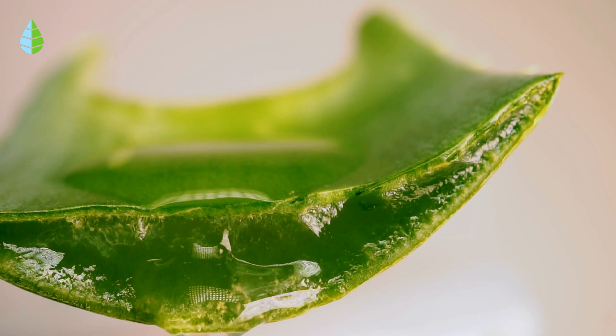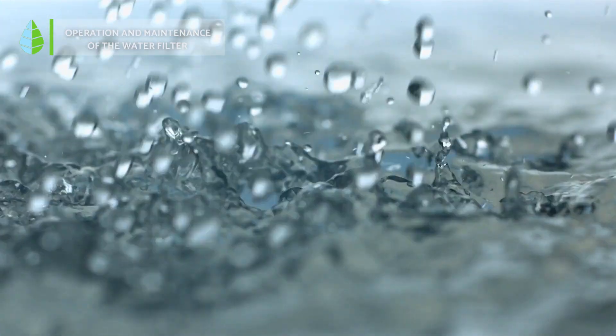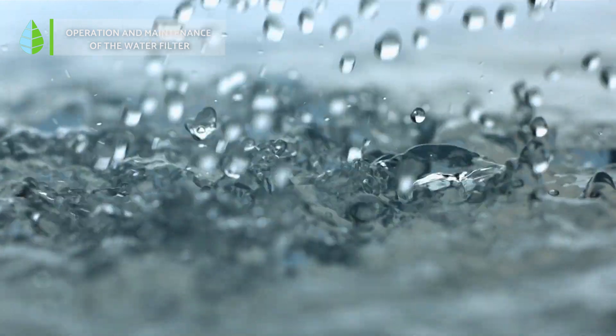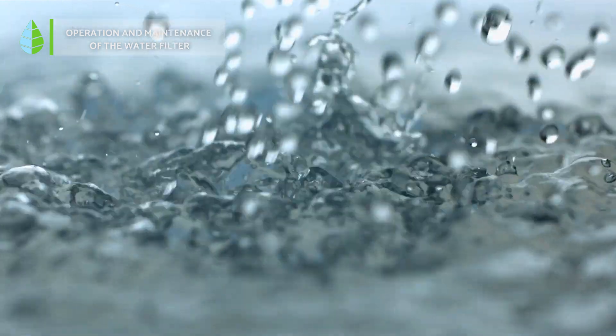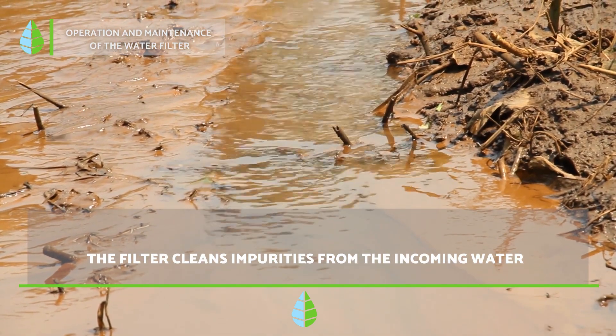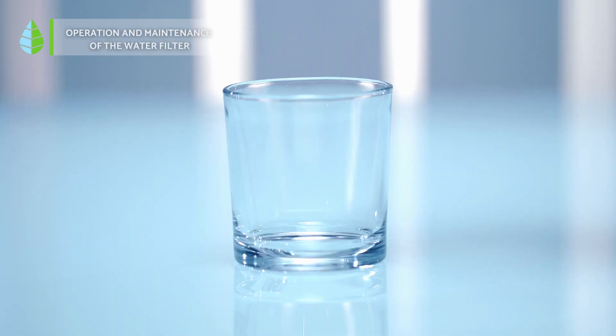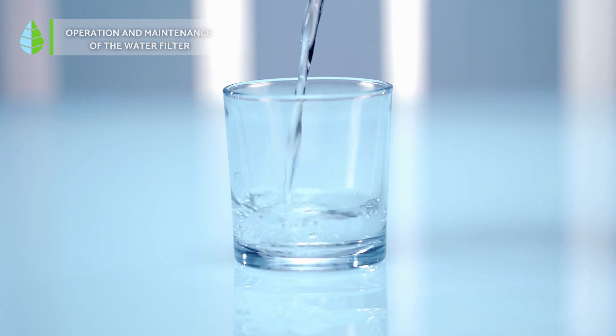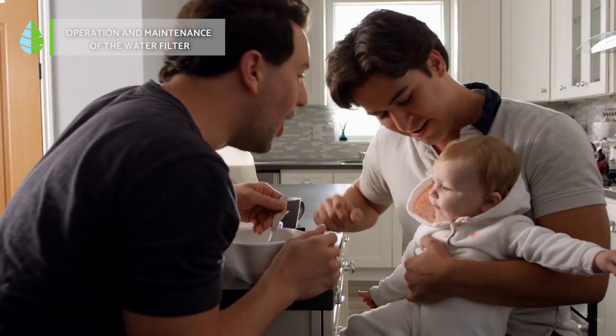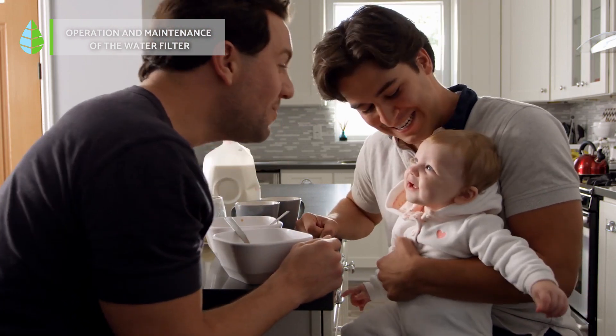Operation and maintenance of the water filter. The filter cleans impurities from the incoming water. It works in such a way that the impurities in the water enter through the upper part of the system, pass through the different layers and then reach the lower part of the system clean and free of impurities. With this filter it is possible to remove most of the impurities from the incoming water. However, if the system is to be used by the whole family another container should be provided to store the clean water.